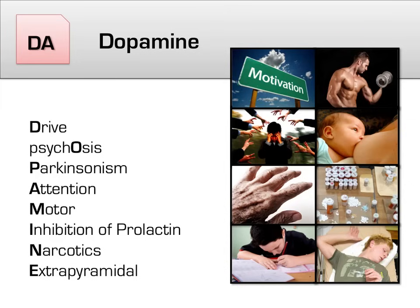O is for psychosis. Specifically, drugs that block dopamine seem to mitigate some features of psychosis, such as delusions and hallucinations. P is for Parkinsonism, as a decreased ability to secrete dopamine in parts of the brain is at the core of Parkinson's disease pathology. A is for attention, as drugs that boost dopamine can be used to improve attention and concentration. M is for motor — dopamine is strongly linked to the body's motor function, and imbalances in dopamine account for conditions such as Parkinson's, where motor function is significantly altered.